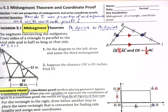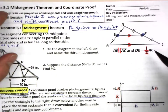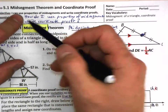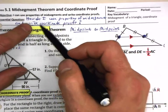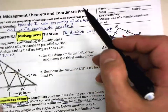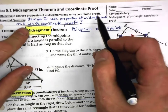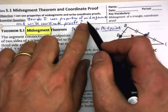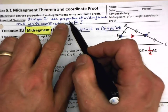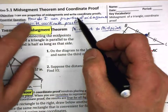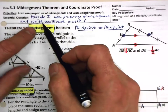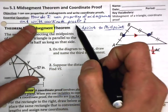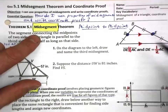Are you ready? Here we go, 5.1. We are moving into Chapter 5, and we're looking at mid-segments and also coordinate proofs. So our essential question is: how do I use properties of a mid-segment? So first we need to figure out what a mid-segment is, and then what are its properties, and then how do we use it. And secondly, we're going to look at writing coordinate proofs. So first of all, mid-segments.